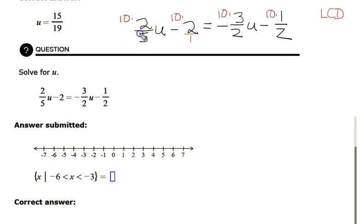5 will go into there once, 5 goes into there twice. Nothing cancels out here, so you will have to eventually multiply the negative 2 by the 10. We'll do that shortly. 2 goes into there once, 2 goes into there 5 times, 2 goes into there once, 2 goes into there 5 times. Now we have 1s for denominators.